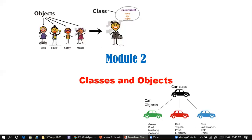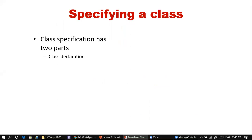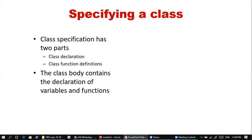Now we want to know how to specify a class and what are the contents of a class. A class consists of two parts: first, the class declaration, and second, the class function definitions. The class body contains the declaration of variables and functions. These variables are called data members, and functions are interchangeably called methods or member functions.